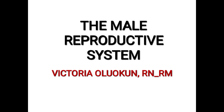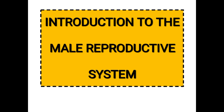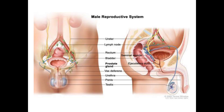Welcome to class. In today's class we'll be discussing the male reproductive system. We can see the diagrammatic representation of the male reproductive system, which consists of a set of organs that are partly visible and partly hidden within the body. The parts that are visible are the scrotum and the penis.